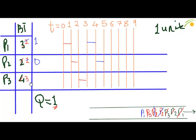It's P3's turn now. P3 will perform its operations and the remaining burst time of P3 becomes 2. Since it is 2, it will join the queue again. Here, it will be P3.